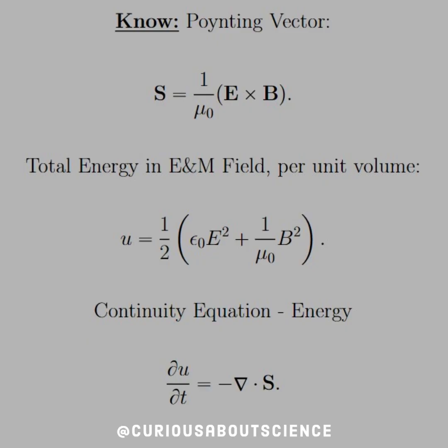This was tackled back in chapter 7 as the question states. What we need to know is the Poynting vector. We also need to know that the total energy in the EM field per unit volume is given by U equals one half epsilon E squared plus one over mu naught B squared. And the continuity equation for the energy states that the partial of U with respect to T equals the negative divergence of S. We've seen that before for the charge, now we see it for the energy.